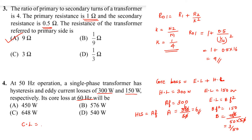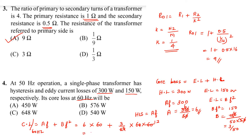Core loss at 60 Hz = A × F + B × F² = 6 × 60 + (3/50) × 60² = 360 + (3/50) × 3600 = 360 + 216 = 576 watt. Option B is correct.